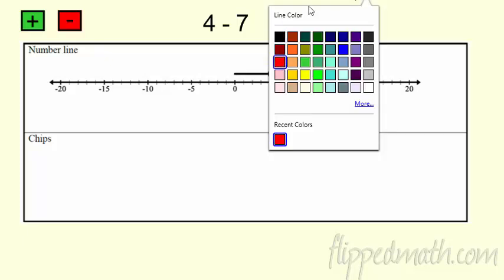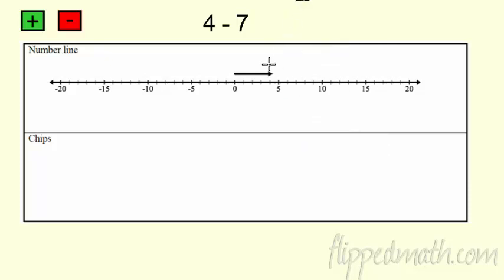We were actually just doing the same problem before. 4 minus 7, so I start here. 1, 2, 3, 4, 5, 6, 7. There it is right there. There's 4 minus 7.